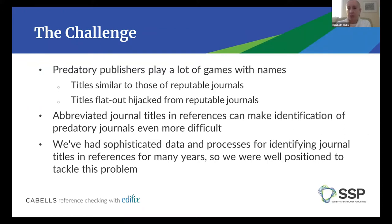Predatory publishers play a lot of games with the names of their journals — they're trying to fool you. So the titles are going to be similar to the titles of reputable journals, and oftentimes even flat-out hijacked. And beyond that, if you think about how journal titles appear in reference lists, there are lots of different ways they can appear. Both spelled-out names and abbreviated names appear in reference lists, and abbreviated journal titles make this identification even more challenging.